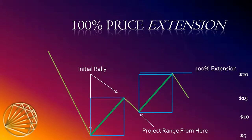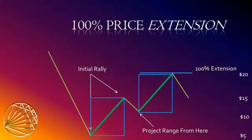Can you see the symmetry between the first rally and the second rally against the trend? The 100% price extension is a popular level where traders expect to find support and resistance, though there are many other levels traders use. The 100% extension — the AB equals CD — seems to have the best results of all the different levels available. Now let's see how to use the price extension routine on a real chart.